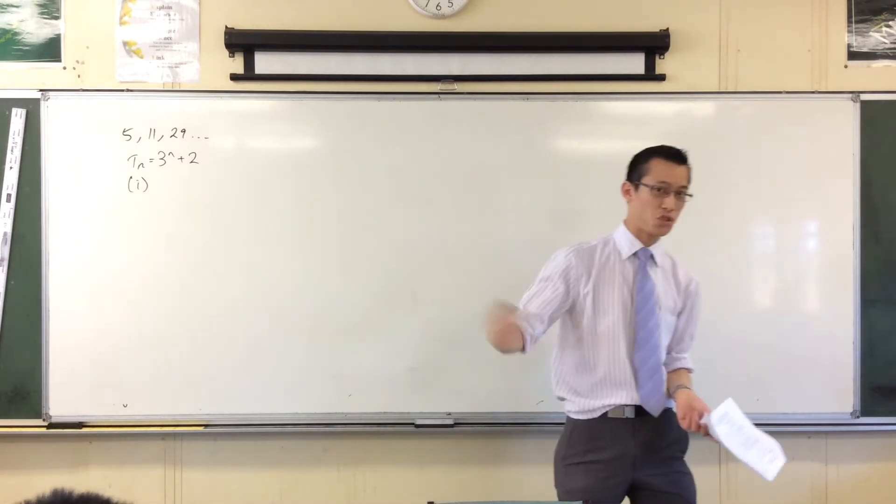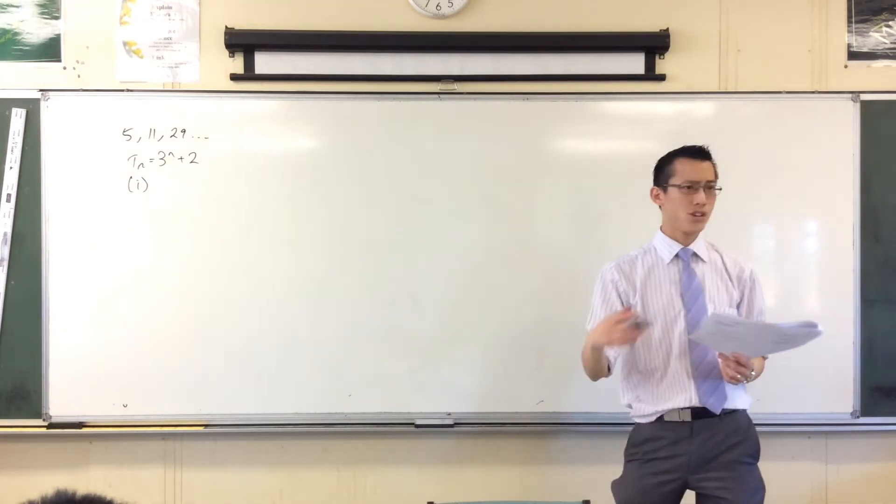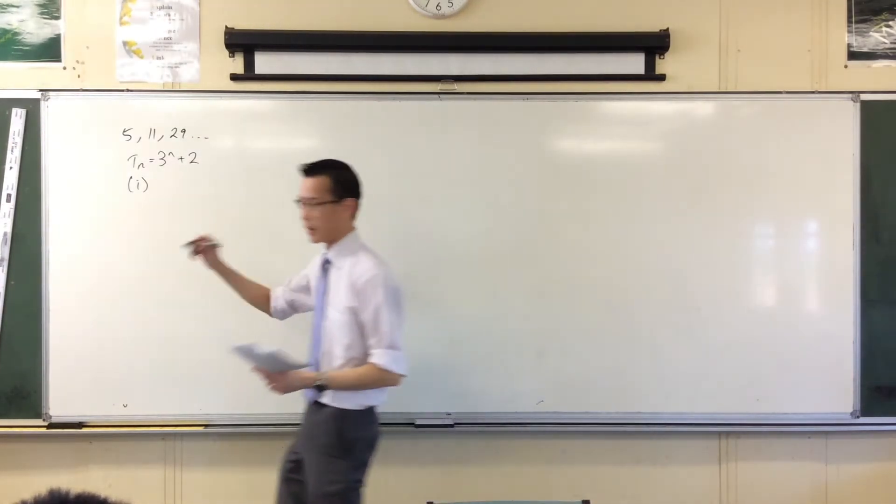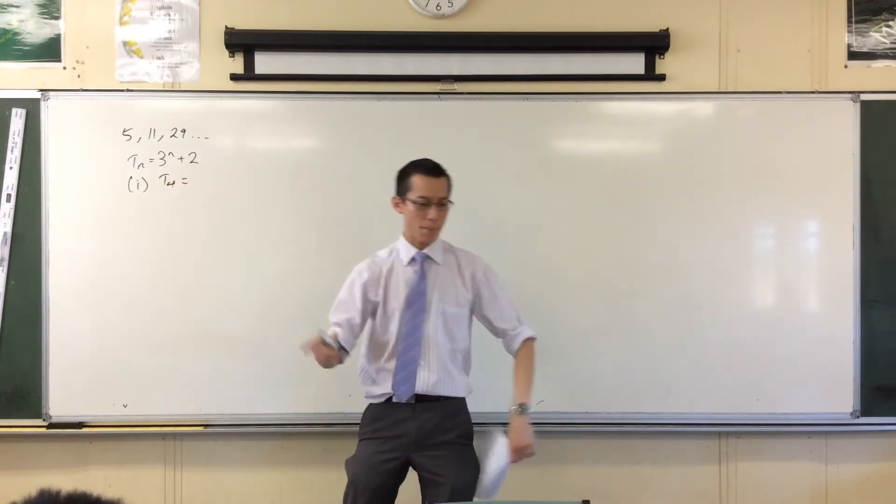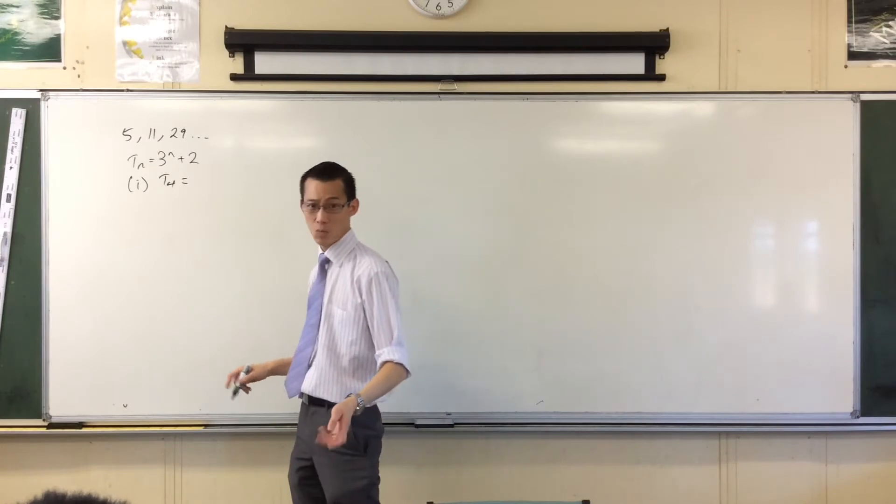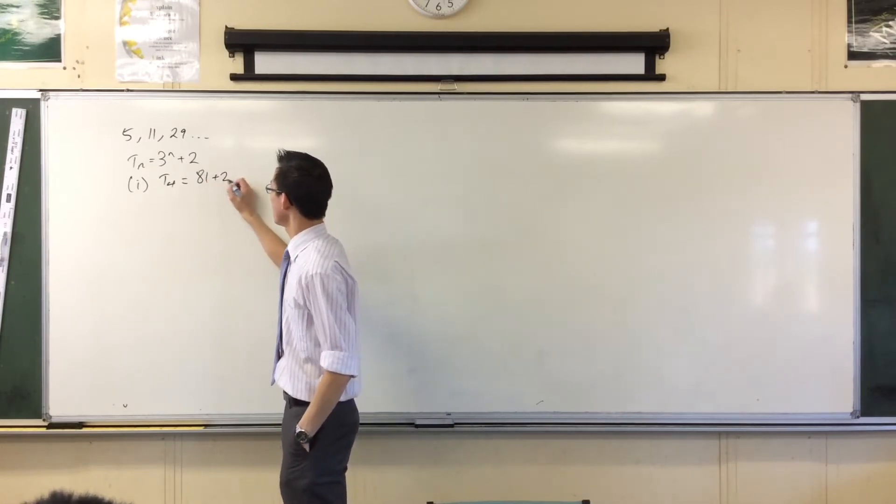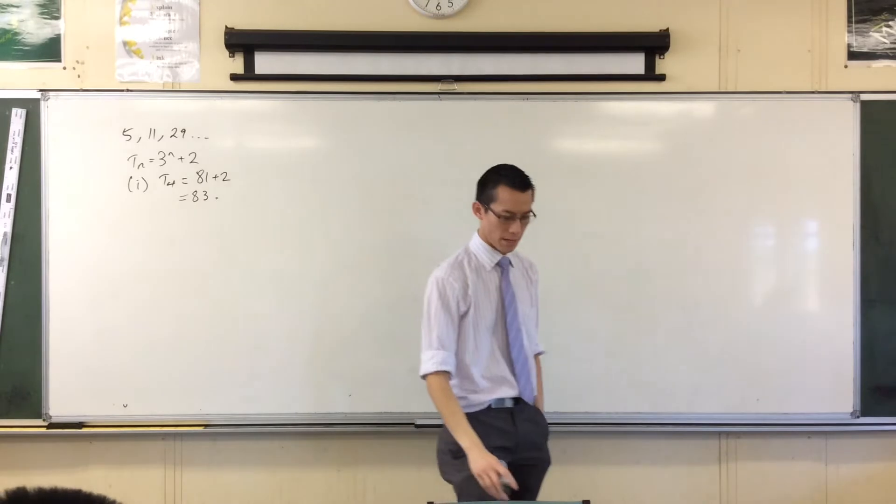They define for you the nth term, so you just have to put n equals 4 in there. So let's just quickly do that. Term 4 is equal to 3 to the power of 4, which is 81, plus 2, which is 83. No problem.